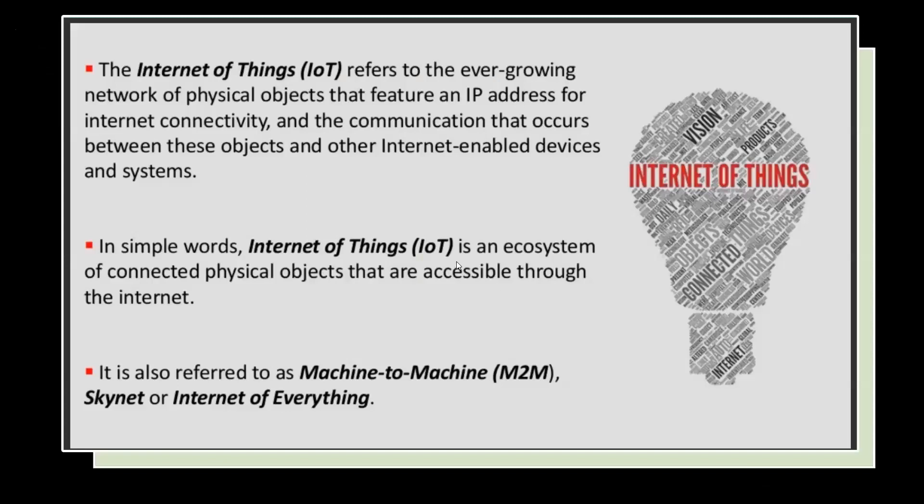The Internet of Things (IoT) refers to the ever-growing network of physical objects that feature an IP address for internet connectivity, and the communication that occurs between these objects and other internet-enabled devices and systems. In simple words, IoT is an ecosystem of connected physical objects accessible through the internet. It is also referred to as machine-to-machine.